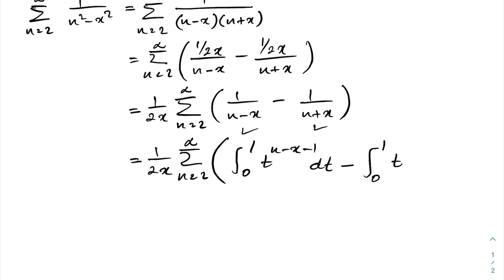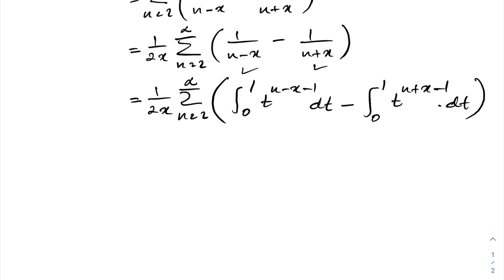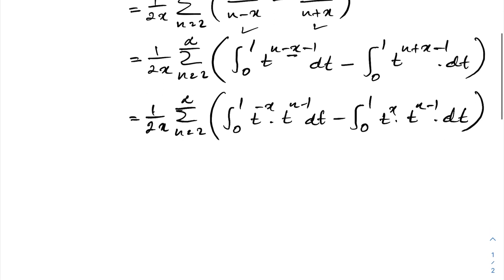And 1/(n plus x) equals the integral from 0 to 1 of t^(n plus x minus 1) dt. Rearranging, we have 1 over 2x times the sum from n=2 to infinity of: the integral from 0 to 1 of t^(−x) times t^(n−1) dt, minus the integral from 0 to 1 of t^x times t^(n−1) dt.